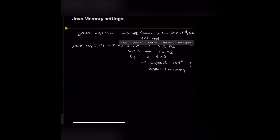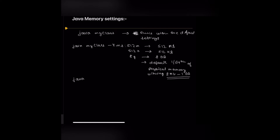We can also define the minimum heap size using the -Xms configuration parameter. This default value lies between 8 MB and 1 GB — if 1/64th of physical memory is less than 8 MB, the default will be 8 MB, and if 1/64th exceeds 1 GB, it will be limited to 1 GB. The next parameter is -Xmx.